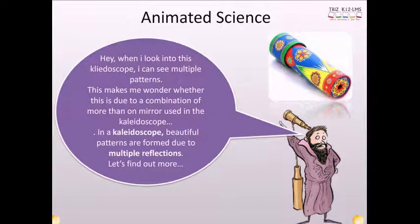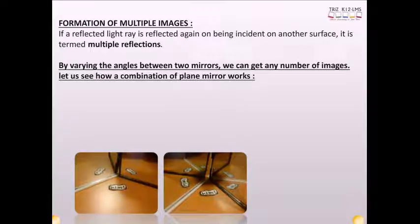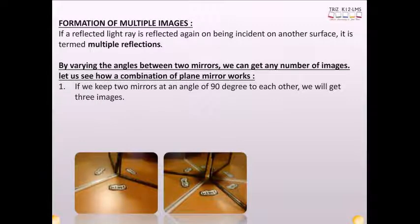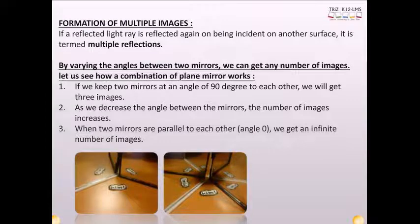Hey, when I look into the kaleidoscope, I can see multiple patterns. This makes me wonder whether this is due to a combination of more than one mirror used in the kaleidoscope. In a kaleidoscope, beautiful patterns are formed due to multiple reflections. If a reflected light ray is reflected again on being incident on another surface, it is termed multiple reflection. By varying the angles between two mirrors, we can get any number of images. If we keep two mirrors at an angle of 90 degrees to each other, we will get three images. As we decrease the angle between the mirrors, the number of images increases. When two mirrors are parallel to each other, angle 0, we get an infinite number of images.